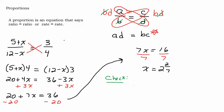Okay. So supposedly if I put this in for x. So 5 plus x. So I would have 5 plus 2 and 2 7ths over 12 minus x minus 2 and 2 7ths. That's supposed to come out to be 3 4ths.